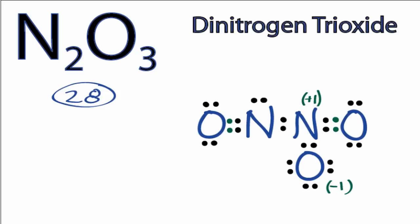We could draw this structure a number of ways. For instance, we could put the double bond between the nitrogen, and that would work as well. However, this is the Lewis structure for N2O3 that has the formal charges closest to zero. And it makes sense the negative 1 is on the oxygen. It's more electronegative than nitrogen.